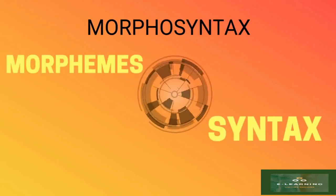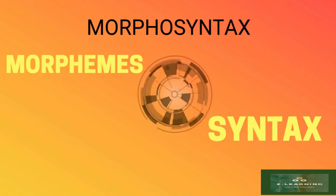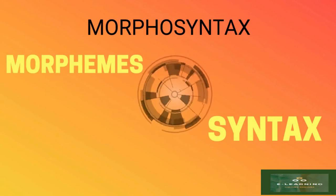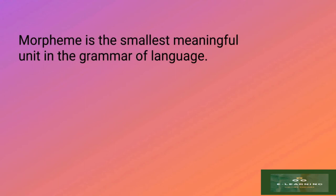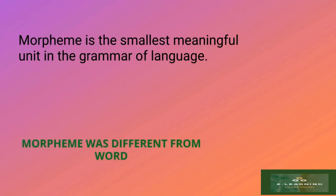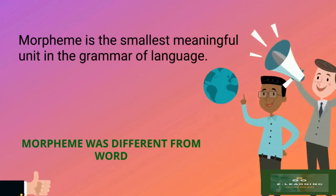Morphosyntech comes from morphemes and syntax — both are branches of linguistic studies. So during this semester we are going to study morphemes first, and after that syntax. A morpheme is the smallest meaningful unit in the grammar of a language. Remember, a morpheme is different from a word. We will show the difference through the examples below.